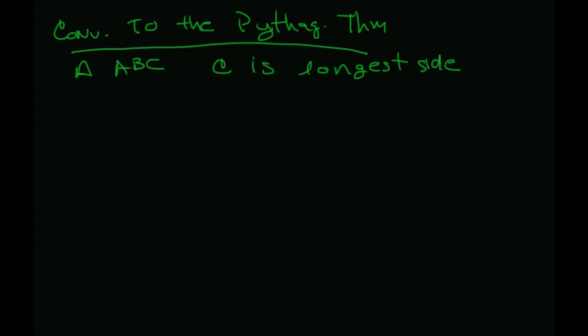So when? We're always going to put the C squared on the left here. Then we're going to put the A squared plus B squared on the right.